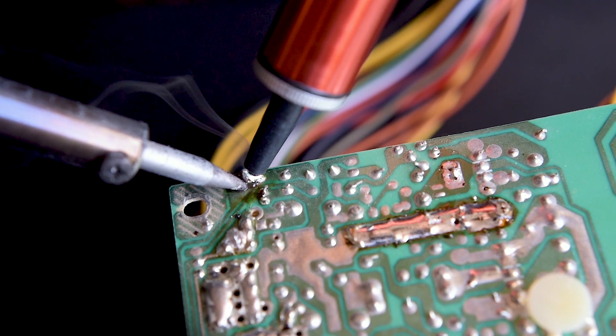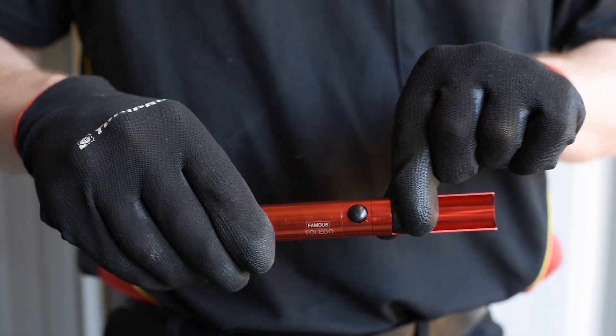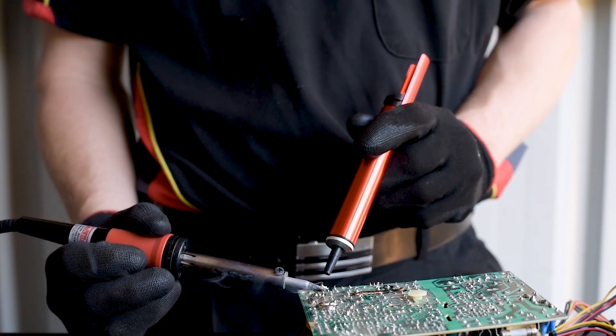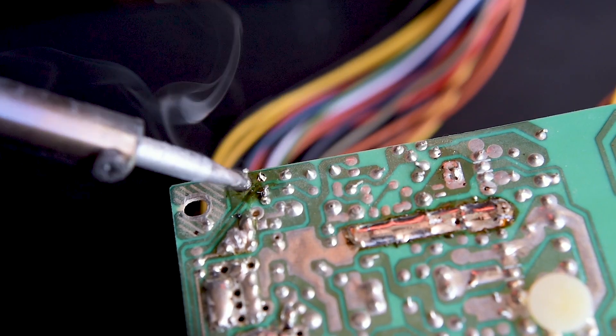This pen-like tool quickly sucks solder away from a join while it's hot. Just depress the button on top to arm the pump. Heat the join until the solder is liquid, place the tip right where you want the solder removed and press the small button on the side. The solder will be quickly sucked into the tool which can be cleaned out later.